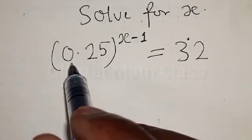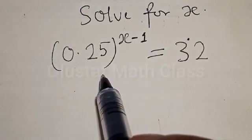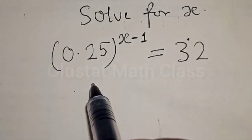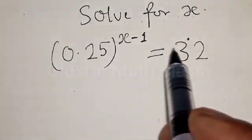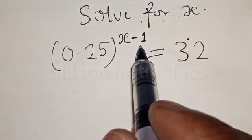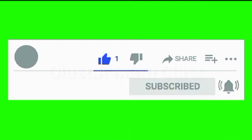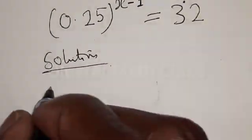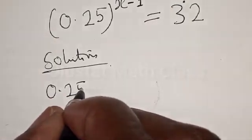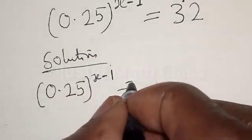Solve for s: 0.25 raised to the power s minus 1 is equal to 32. Hi everyone, welcome to my class. In this class we want to look at how we can quickly solve for s from this given exponential equation. Before we proceed, please don't forget to like, share, comment, and subscribe.